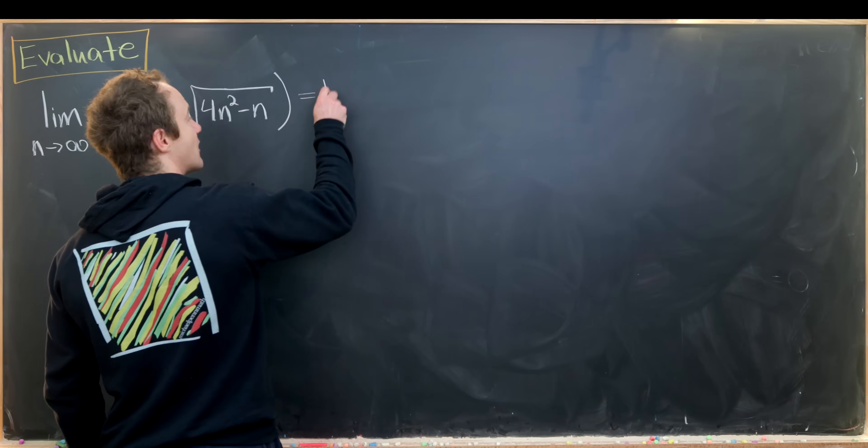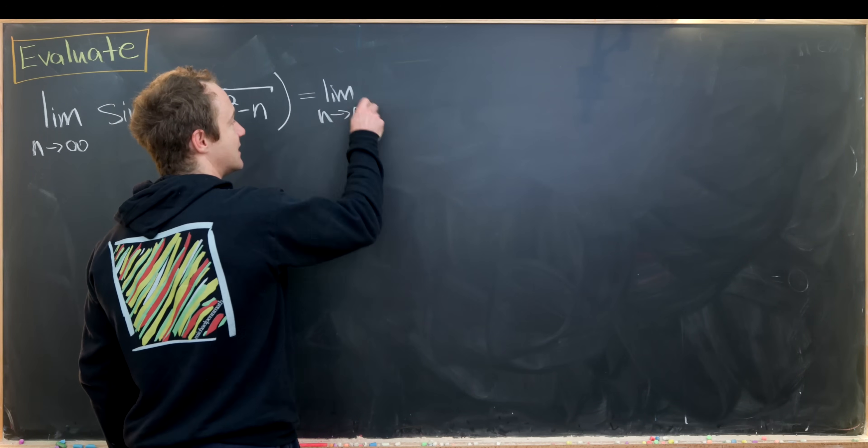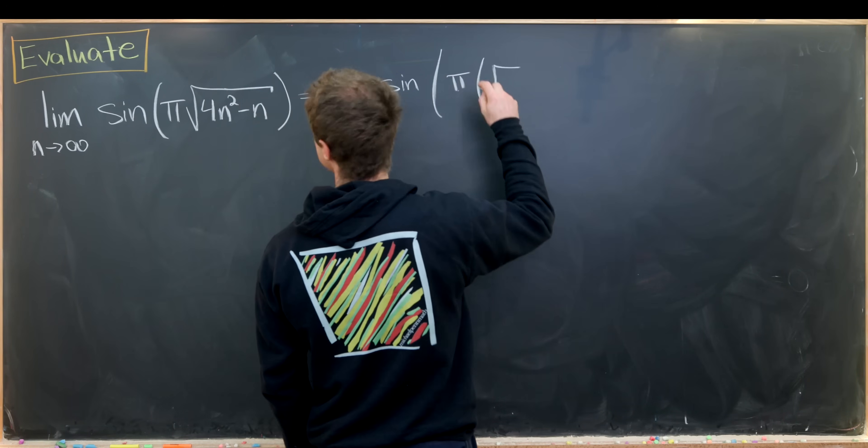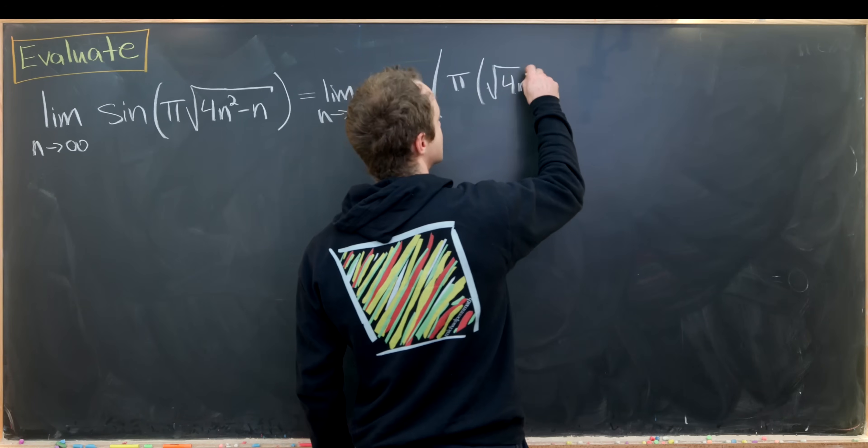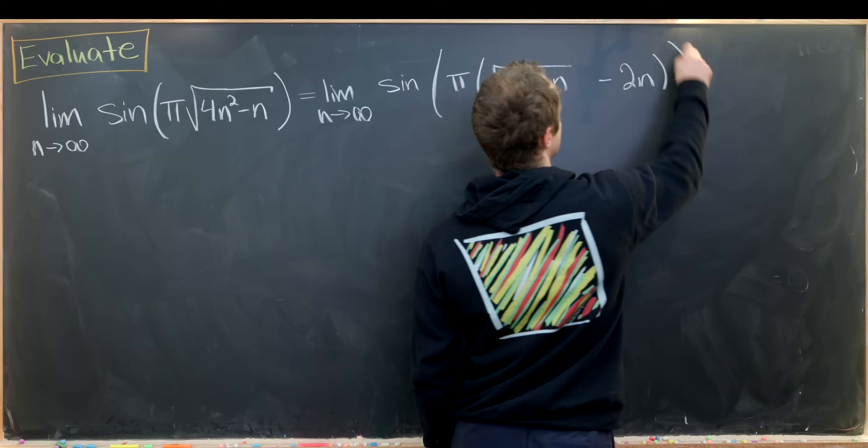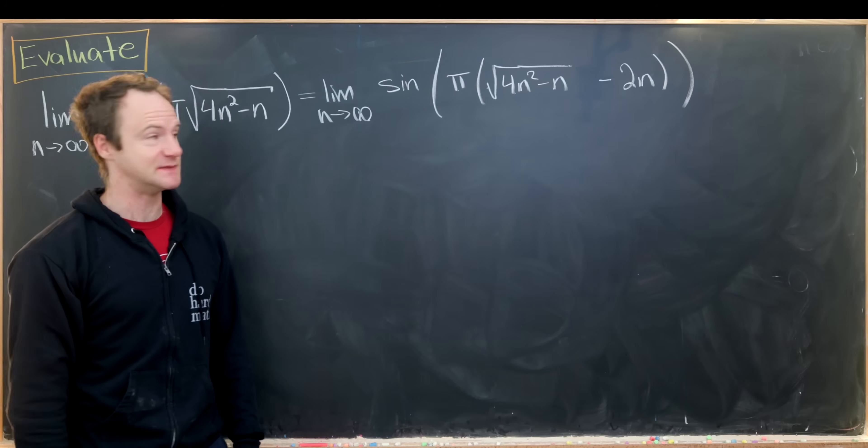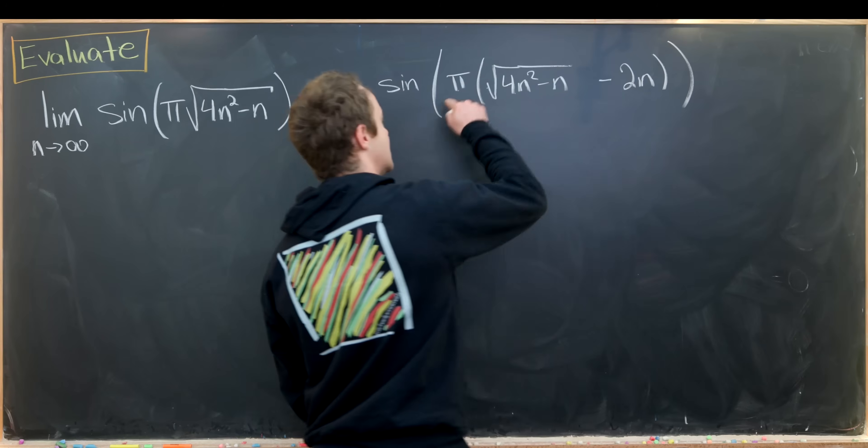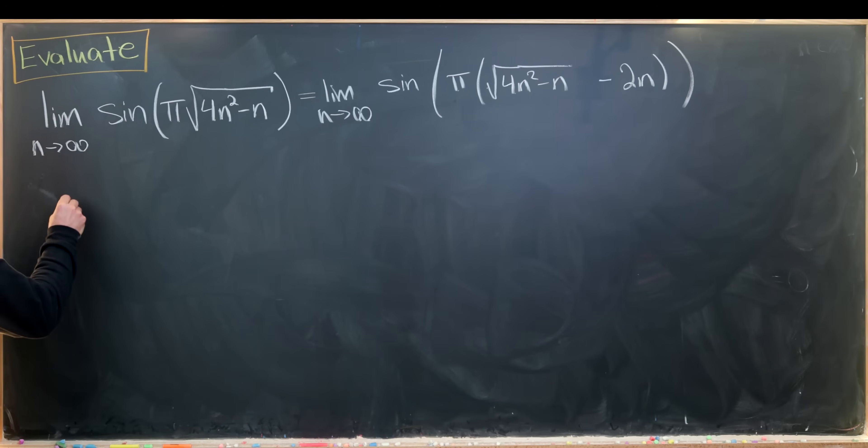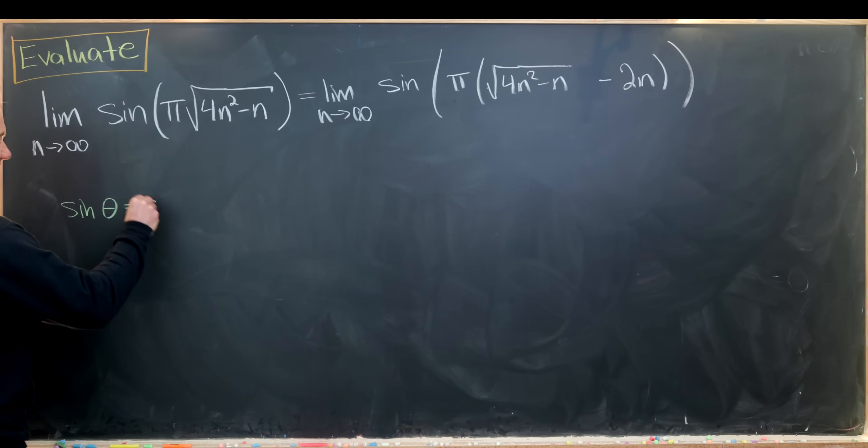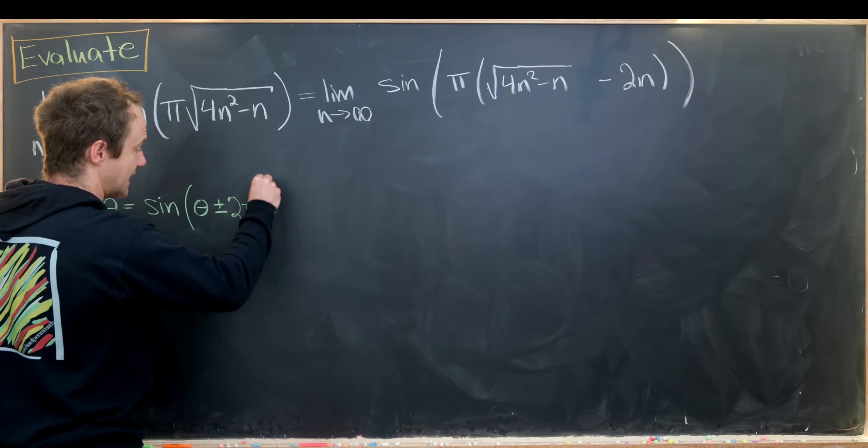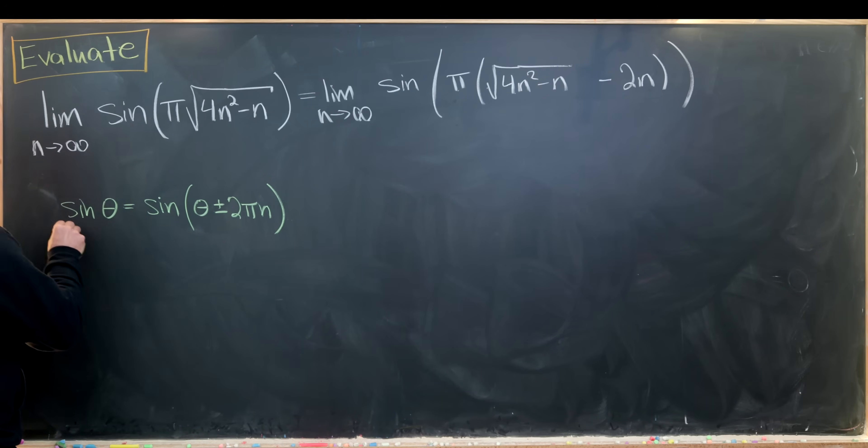So I'll take this and I'll rewrite it. I've got the limit as n goes to infinity. I have sine of pi times the square root of 4n squared minus n and then we have minus 2 times n. So I'm allowed to just freely subtract that 2 times n because it's really 2 times n pi. And here I'm using again the fact that sine is 2 pi periodic. So we have sine of theta is the same thing as sine of theta plus or minus 2 pi n. In this case we have minus 2 pi times n.